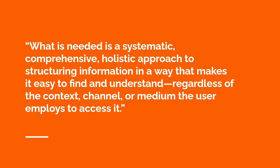Information architecture partially focuses on thinking about information in abstract ways so that someone like Mario is presented with a common and understandable experience across platforms and devices. One way you do this is by striving for coherence across channels — meaning how you use a platform should be similar across devices. For example, a bank website should have the same look and feel across a mobile device as it does on a desktop browser, and the user experience should feel consistent and similar.